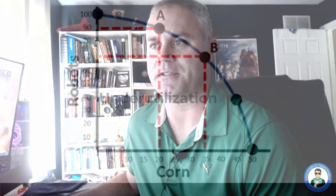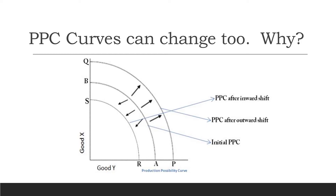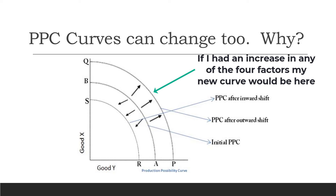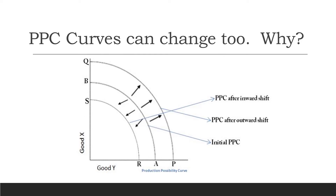PPCs can change. On this graph, B is our original PPC curve, but we have two other curves as well — QP and SR. The SR curve is the result of a reduction in factors of production. If I reduce the amount of resources or labor available, you can't make as much as before, which is why that curve is smaller and shifts inward to the left. To increase the factors of production causes the curve to shift outward to the right. This concept also applies to supply and demand curves later — increases shift right and decreases shift left.